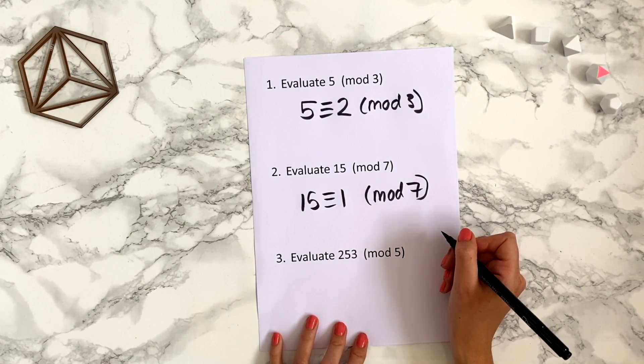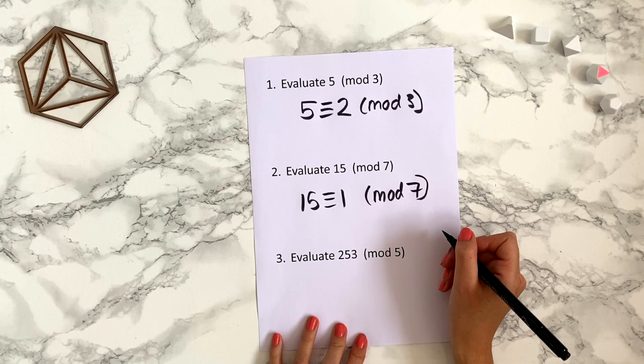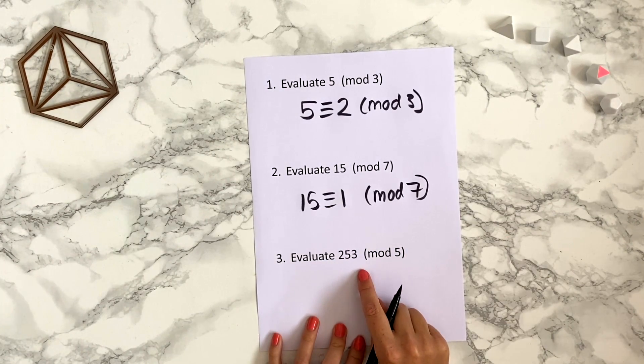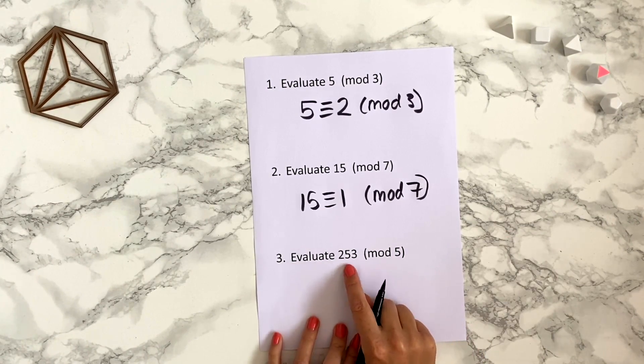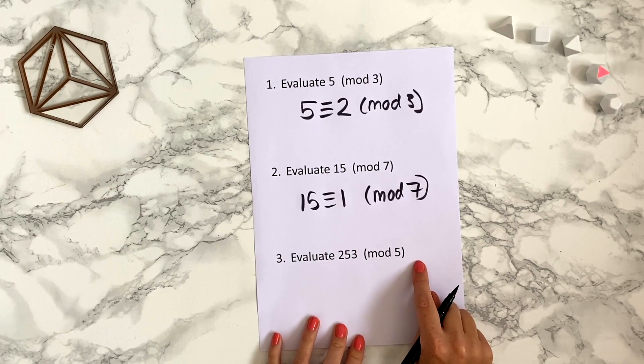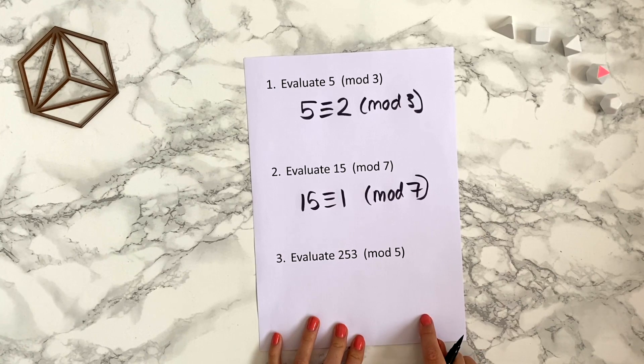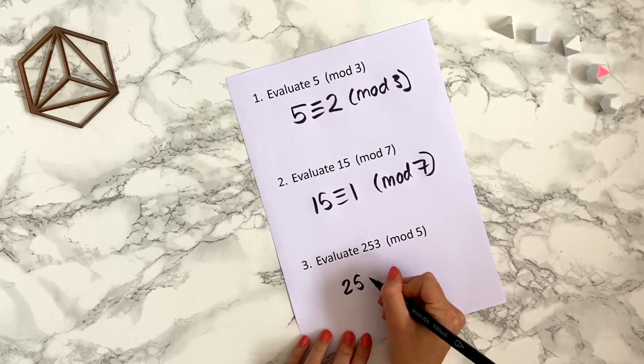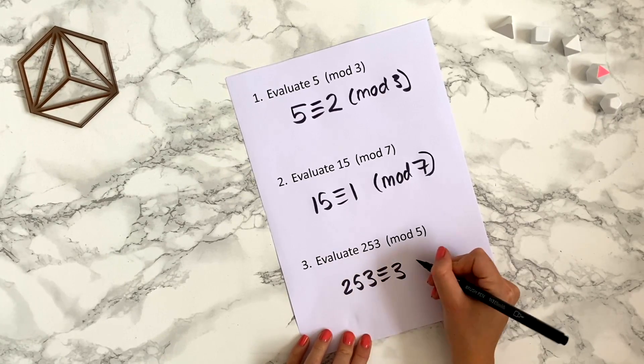Also you can think the remainder when we divide 15 by 7 is 1. How about 253 mod 5? Well 250 is divisible by 5. So 250 would be at the top of the clock. Go around 3 more to get to 253. That would bring us to 3 o'clock. So 253 is congruent to 3 mod 5.